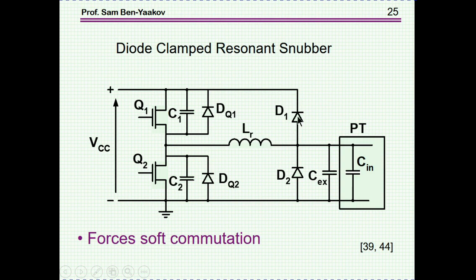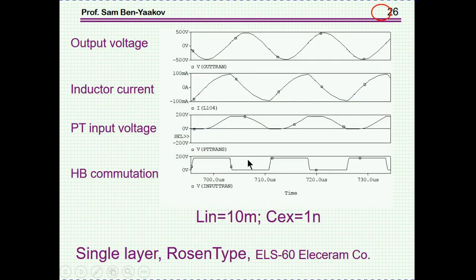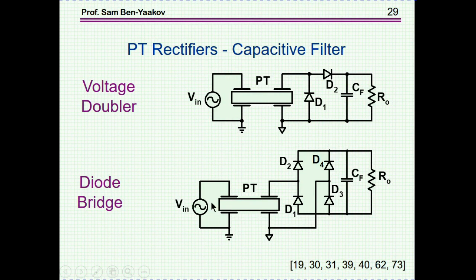A better way is to use a clamp diode. In this case you are assured of very good soft switching, at the expense of a little more circulating current through the inductor when it is clamped. In this case you get a very nice waveform: the input voltage to the piezoelectric transformer, the clamped voltage, the inductor current, the output voltage, and the commutation of the half bridge — all indicative of nice zero voltage switching.